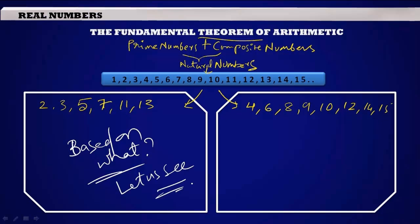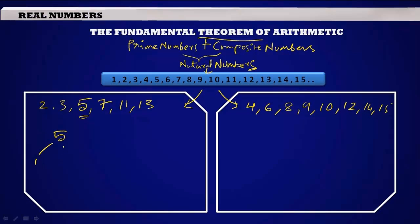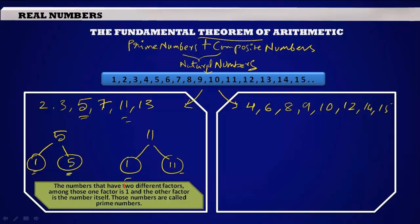Based on what I made this division, let us see. Let us pick a number from this group and find out its factors. Say 5 - its factors are 1 and 5. Take one more number, let us take 11 - its factors are 1 and 11. So what do we observe in this set? Every number is having two factors: one factor is always 1 and the other factor is the number itself. The numbers that have two different factors, one factor being 1 and the other factor being the number itself, those numbers are called prime numbers.